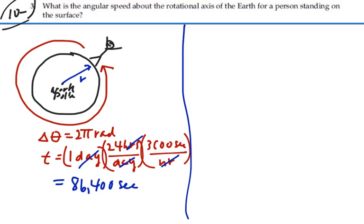So, in terms of angle, the person anywhere on the Earth is going to go through an angle of 2π radians in 86,400 seconds. Our average angular speed is going to equal this angular displacement per time, and so that's going to be equal to 2π radians in 86,400 seconds.